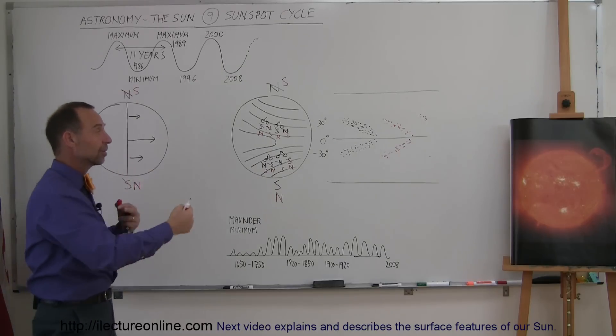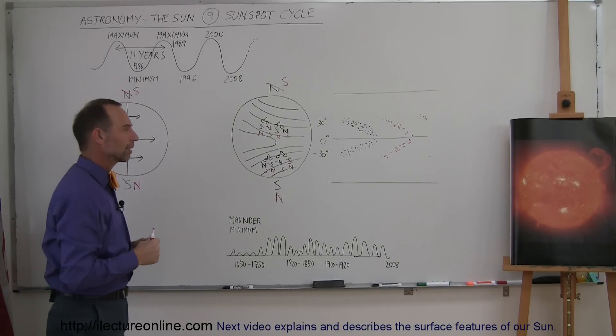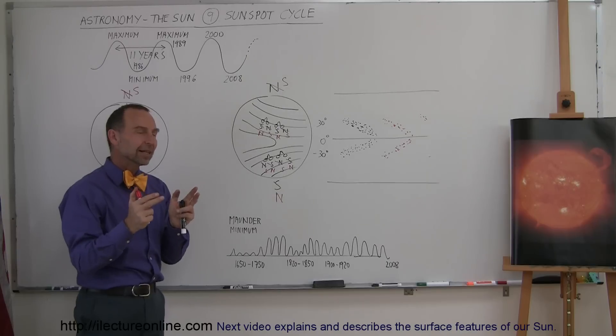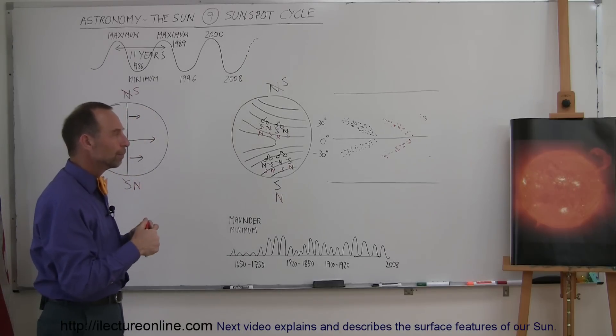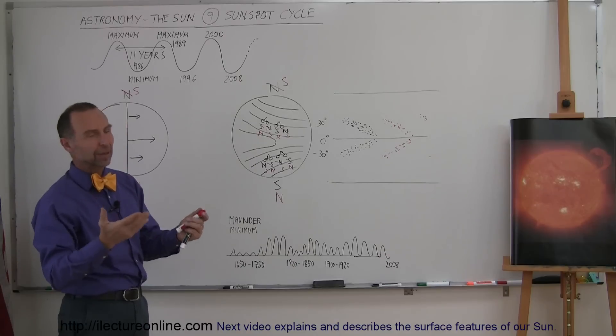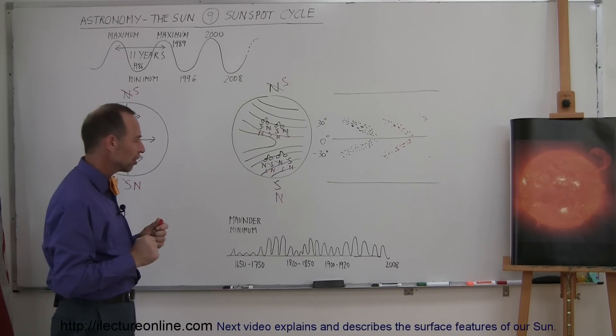Every 11 years, the cycle simply reverses the orientation of the magnetic field. What we have discovered, though, is that every cycle is somewhat different from the previous one. They're all about 11 years long. Sometimes they're 10, sometimes they're 12 years long.